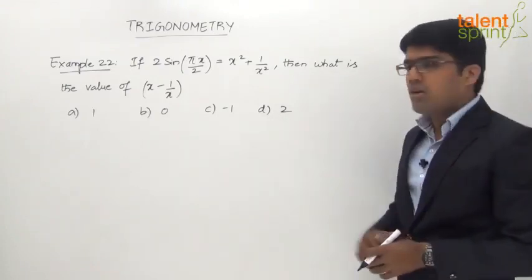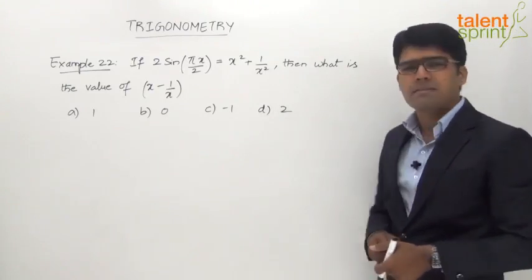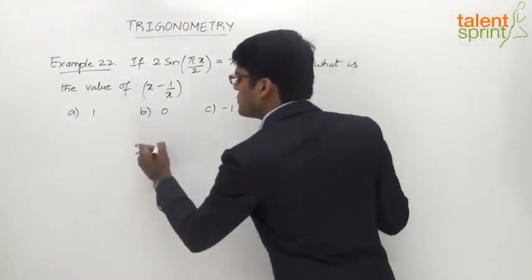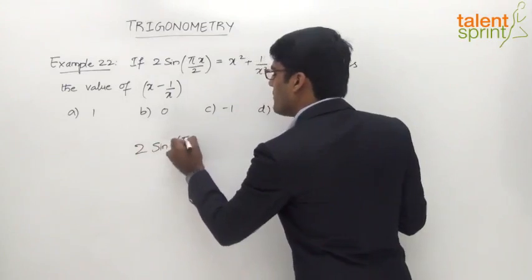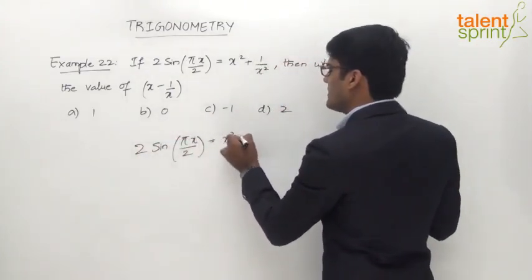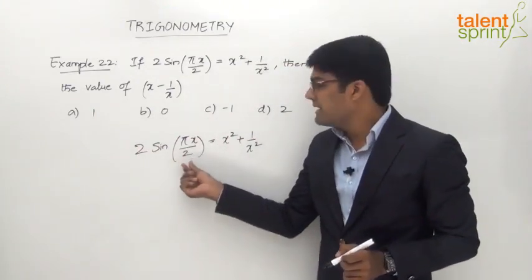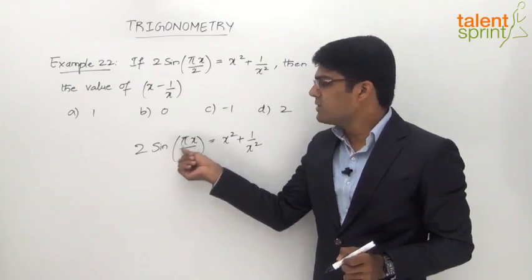The question has a trigonometric equation which says 2 sin(πx/2) = x² + 1/x². So basically, what is the angle theta here? It is a multiple of 90 degrees. We know that π/2 radians equals 90 degrees.